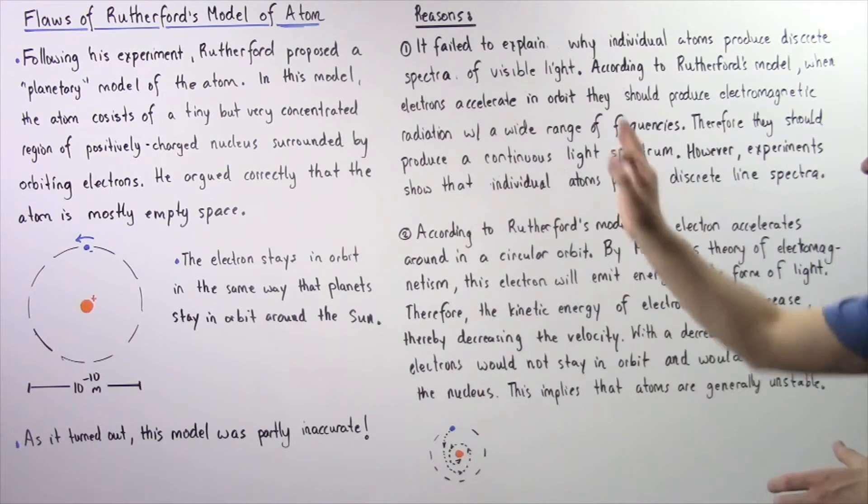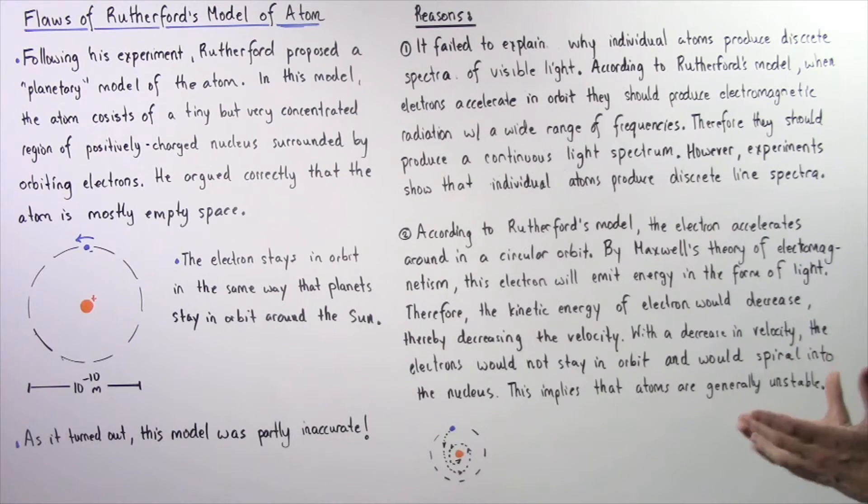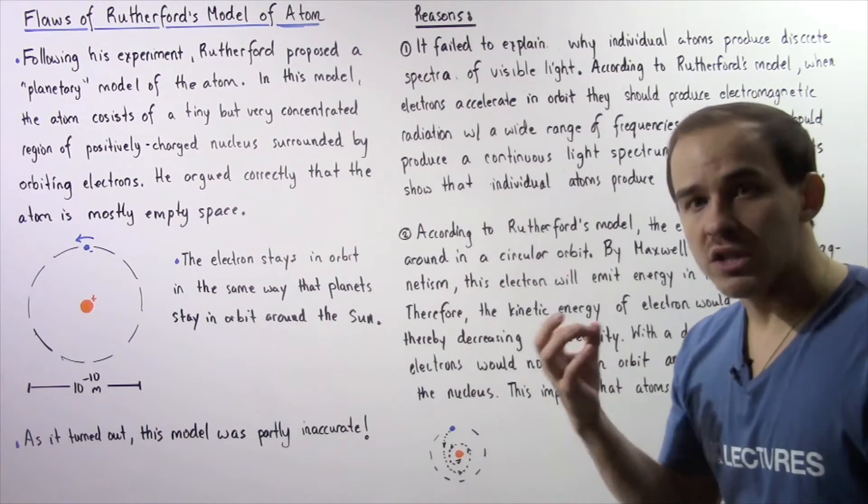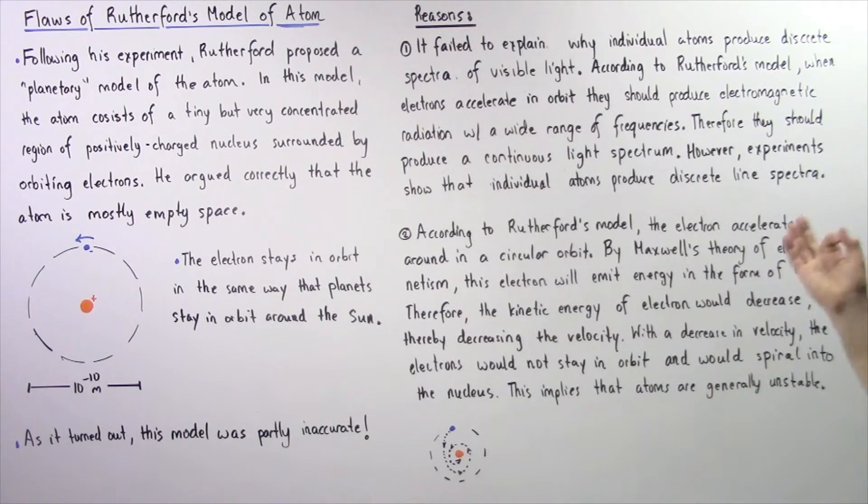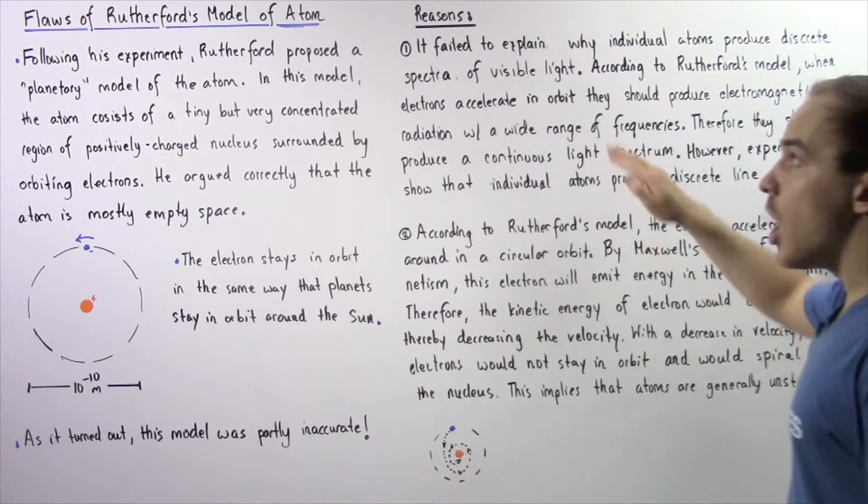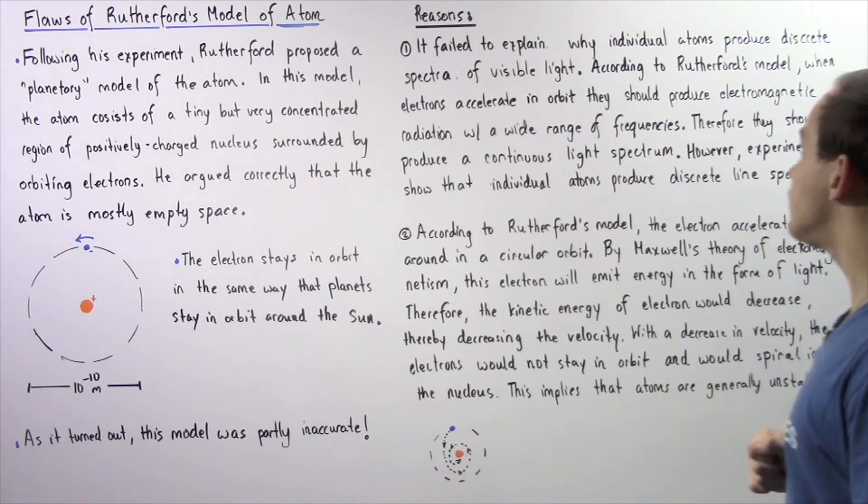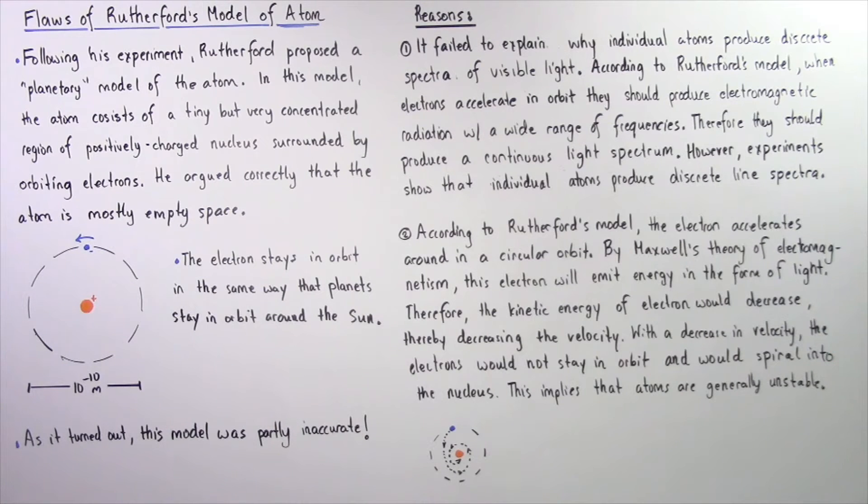Now this model basically failed to explain why individual atoms produce discrete spectra of visible light. According to Rutherford's model of the atom, when electrons accelerate in orbit,